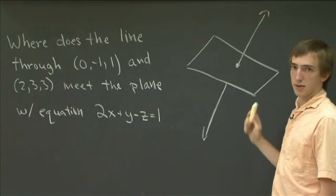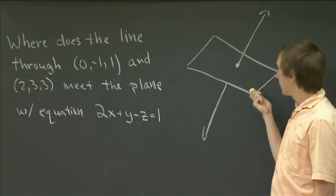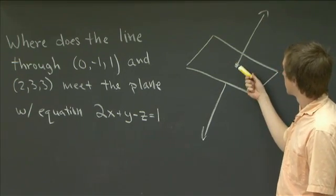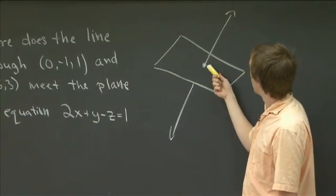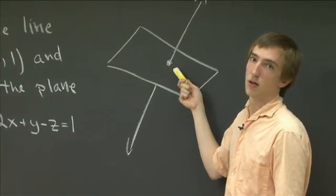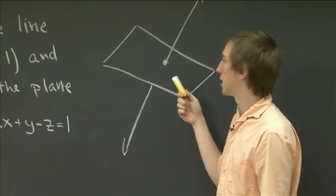And there's this single point of intersection. Even from the cartoon, we can kind of see two things which are going on, which is that we would expect a point of intersection, and we would expect exactly one if we choose kind of a generic line and a generic plane.